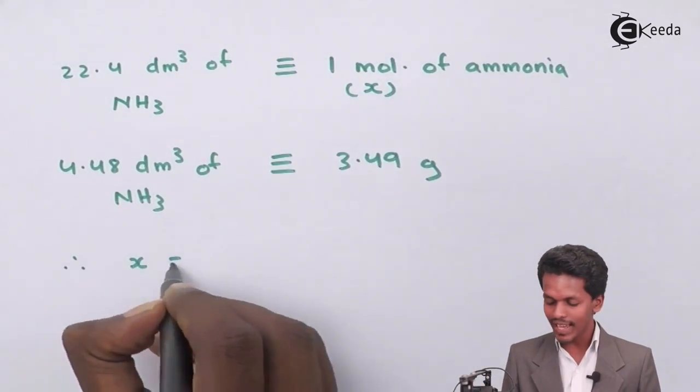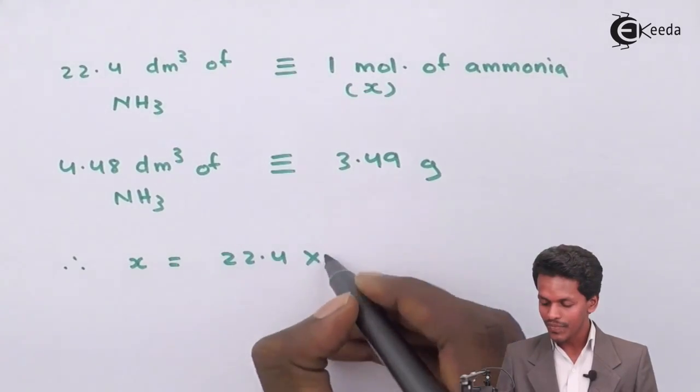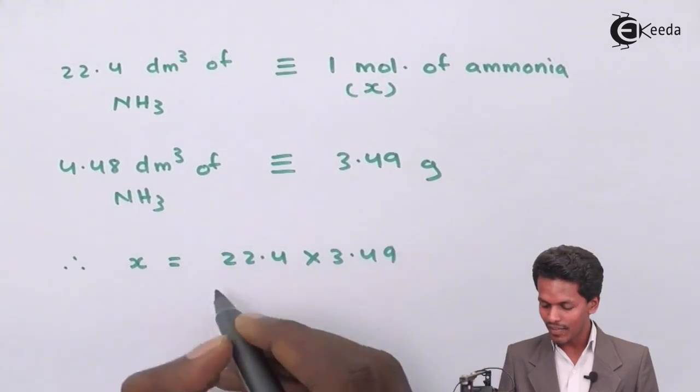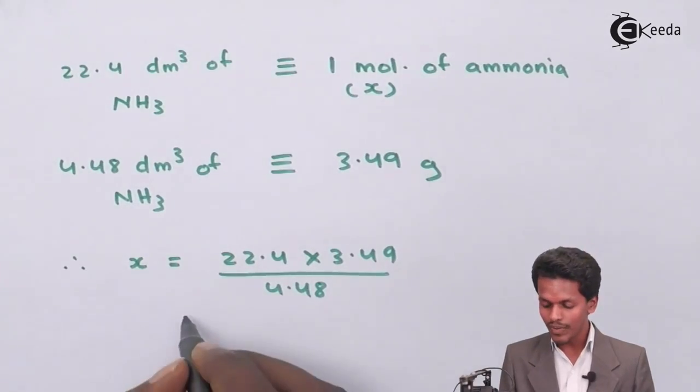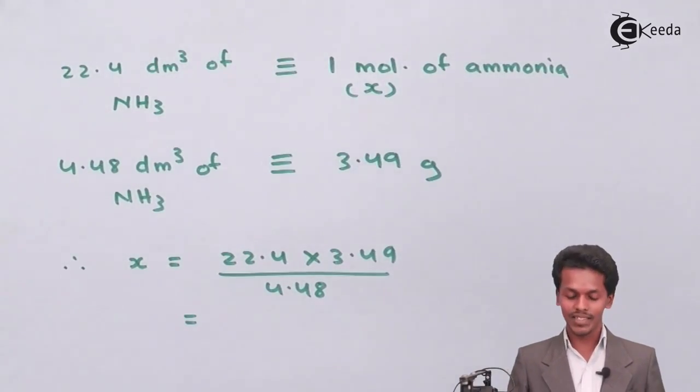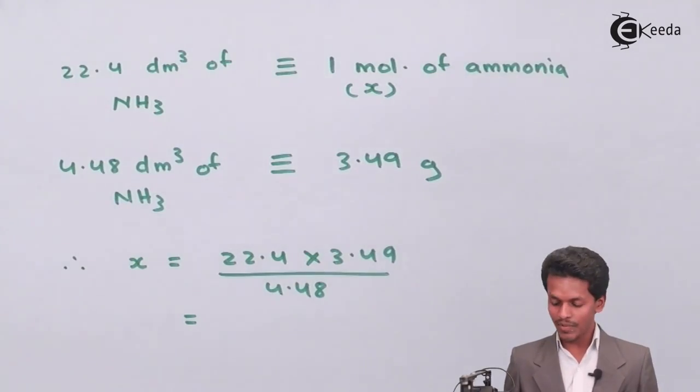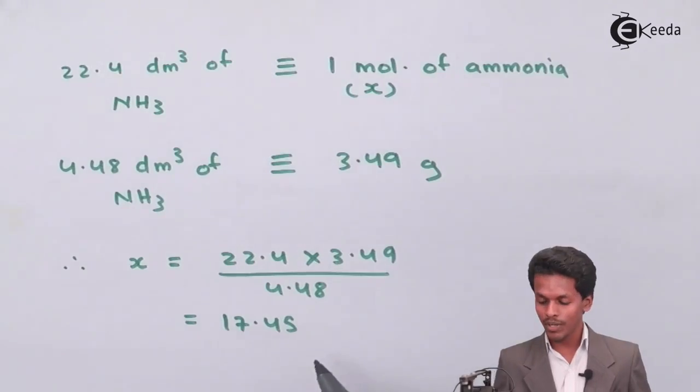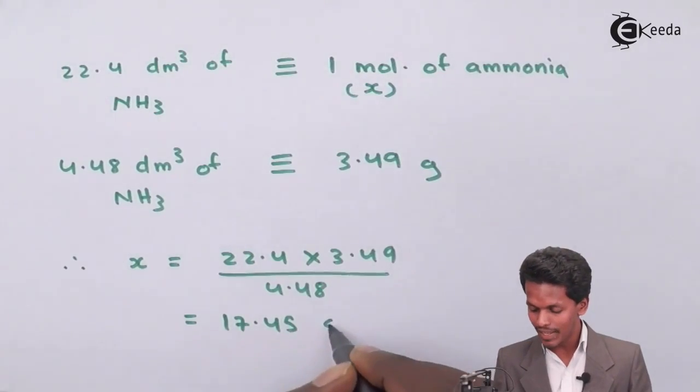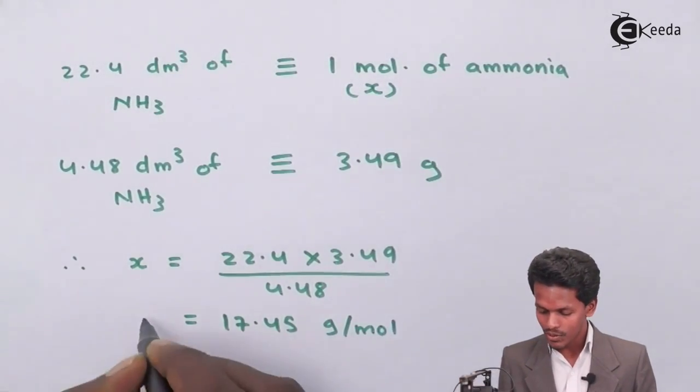I could easily calculate as x equals 22.4 times 3.49 divided by 4.48. The answer that is being found out is 17.45, but since we are talking about moles, it will be grams per mole.